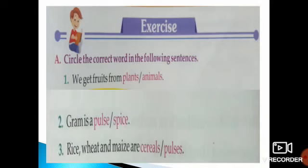Question A: Circle the correct word in the following sentences. Number 1 — we get fruits from plants or animals. The answer is plants. We get fruits from plants, so circle plants.